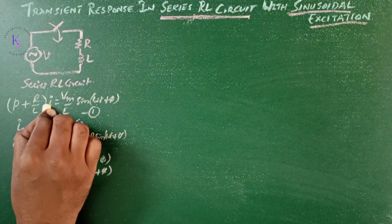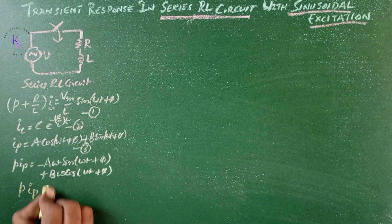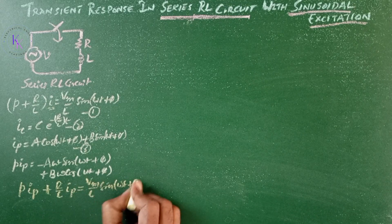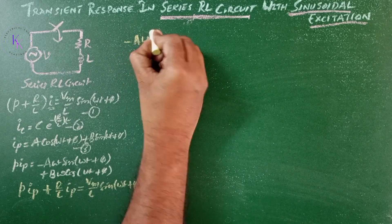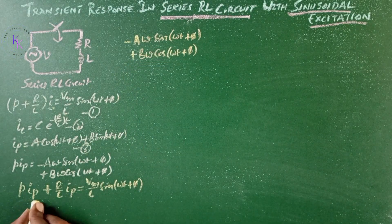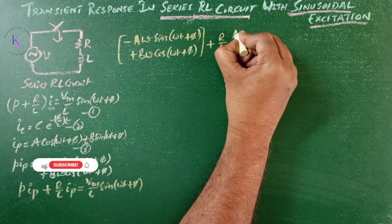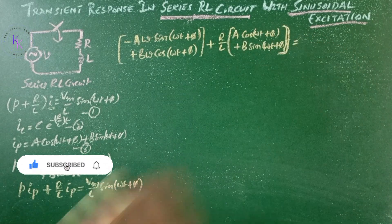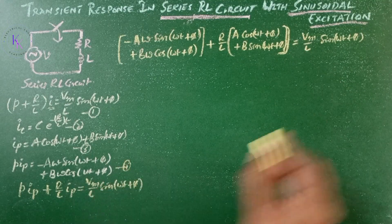Considering Ip in equation number 1 to obtain the particular solution: P·Ip + (R/L)·Ip = (Vm/L)·sin(ωt + φ). Substituting these expressions: [−A·ω·sin(ωt + φ) + B·ω·cos(ωt + φ)] + (R/L)·[A·cos(ωt + φ) + B·sin(ωt + φ)] = (Vm/L)·sin(ωt + φ). Consider these as equations 4 and 5.